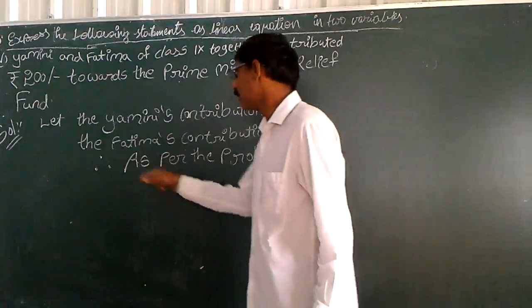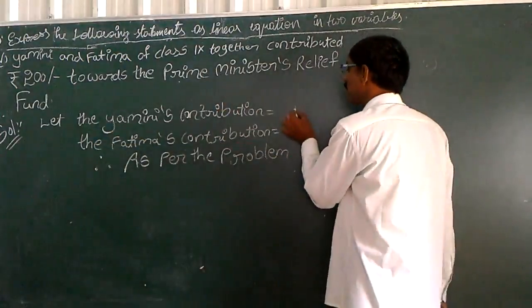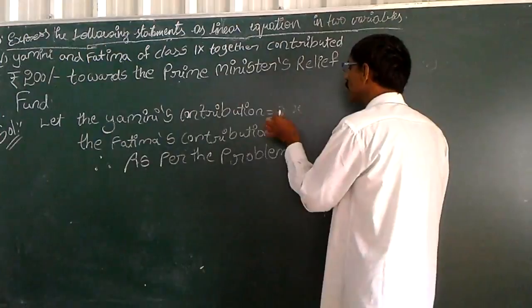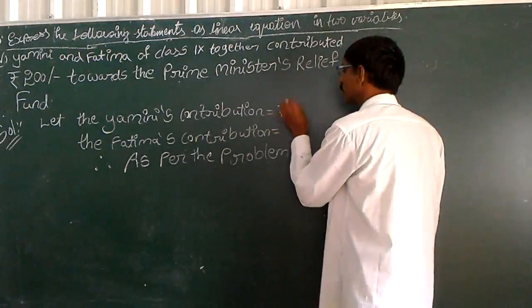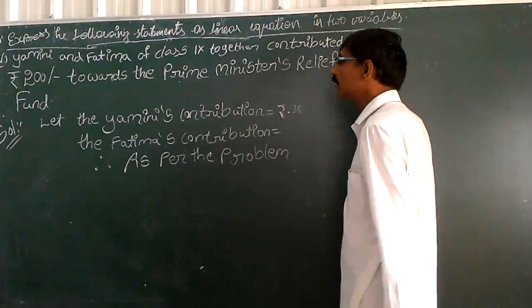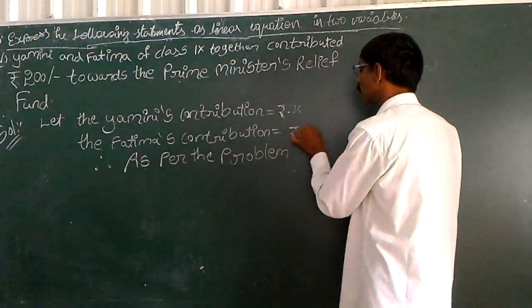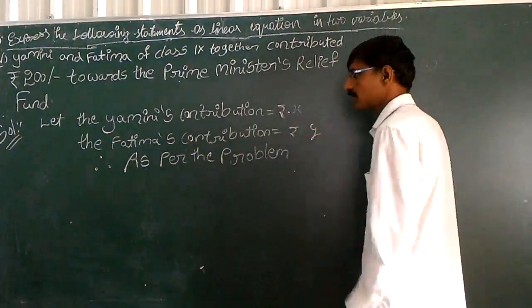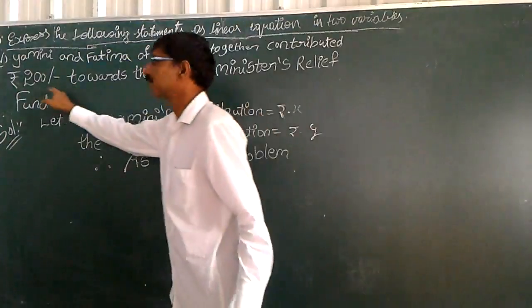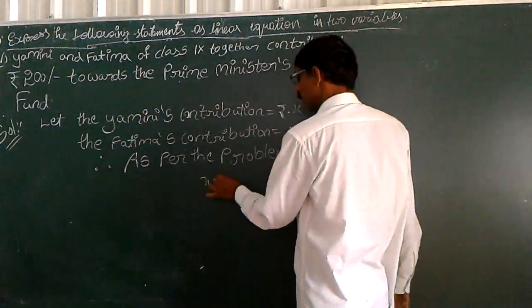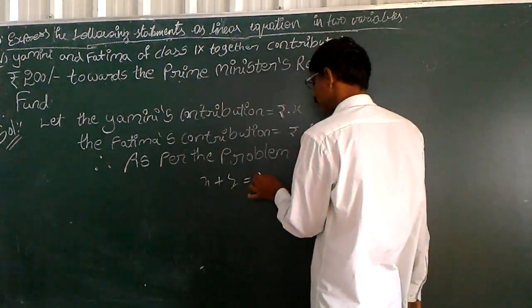Let Yamini's contribution be X rupees and Fatima's contribution be Y rupees. So, X plus Y is equal to 200.